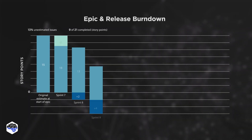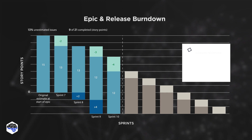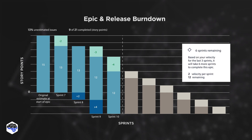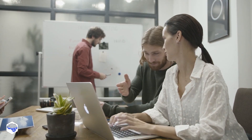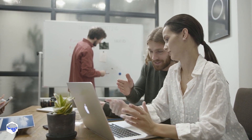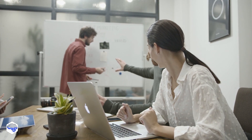The next metric is epic and release burndown. This metric is similar to sprint burndown, but the key difference is that it focuses on the team's productivity before and after the release. It's an improved version of sprint burndown as it also incorporates tasks that are given after the release of the project.